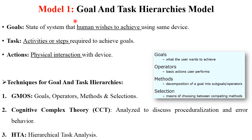The first model is the Goal and Task Hierarchy Model. It involves three main components: goal, task, and action. Goal means the state of the system that the user wishes to achieve using a device — it is the aim of the user. Task means activities or steps required to achieve a particular goal. Action means physical interaction with devices. For this model, there are 3 techniques used. First, GOMS — Goals, Operators, Methods, and Selection. Goals means what the user wants to achieve; Operators means basic actions the user performs; Methods means different sub-goals or operators; and Selection means choosing the proper method between all of them.